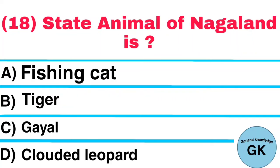Question Number 18. State Animal of Nagaland is: A. Fishing Cat, B. Tiger, C. Guile, D. Clouded Leopard. Answer: Guile.